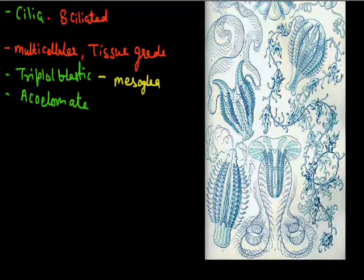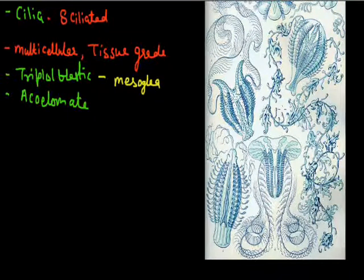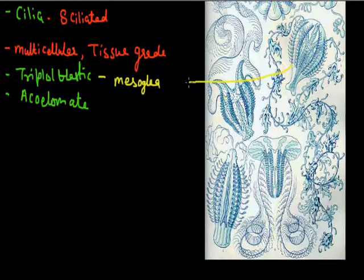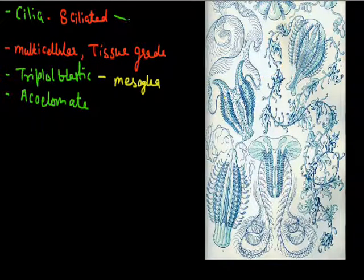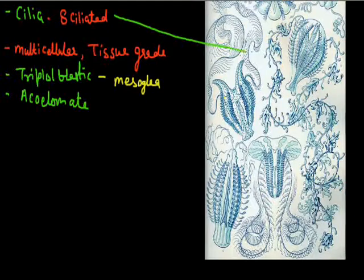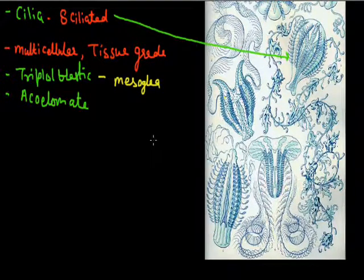We call them comb jellies. They have ciliated plates on their body surface — eight ciliated plates are present on their body surface. These eight ciliated plates are present in rows and are useful for locomotion.